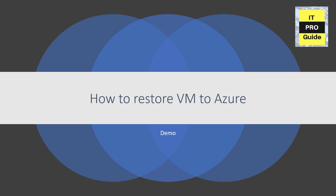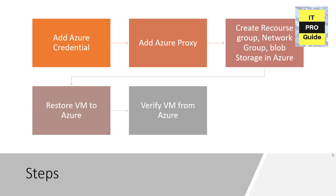Let's move to the demonstration. The steps involved in the restoration process are: add your Azure credentials, then add Azure Proxy (that is optional — it just speeds up recovery), then create a resource group, network group, and blob storage in Azure Cloud, then start the restoration of the virtual machine to Azure, and finally verify the virtual machine from the Azure portal.